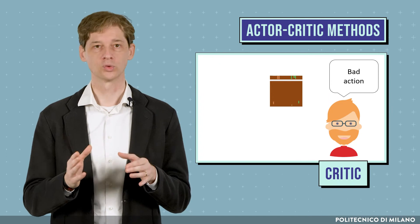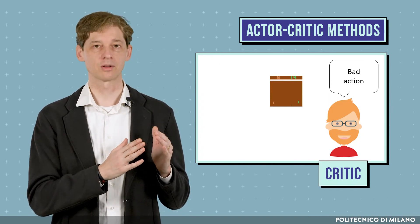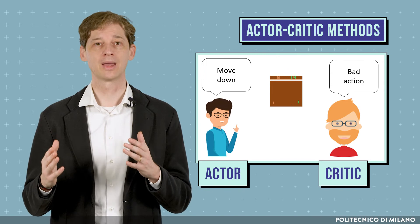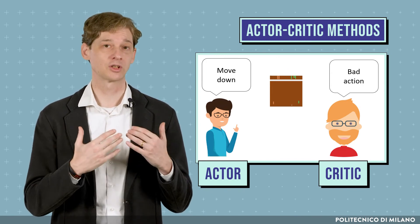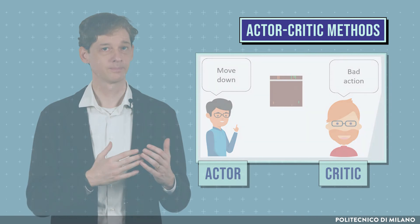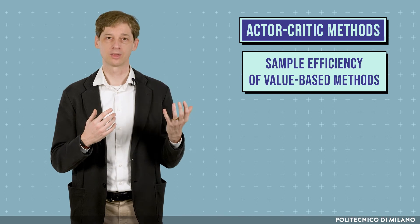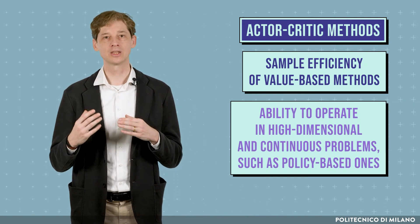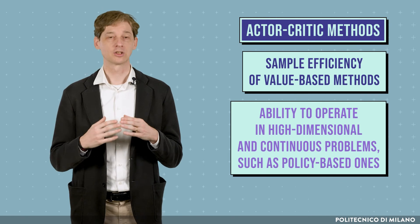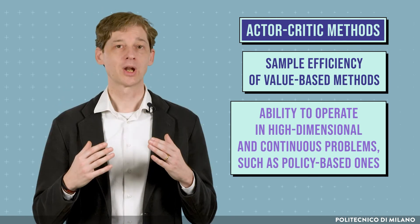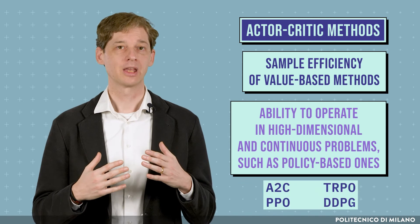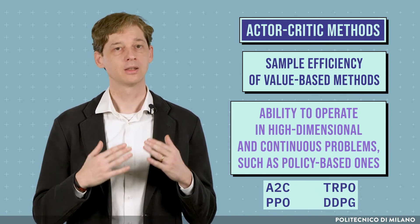The third category of methods tries to combine the strong points of the previous two. In actor-critic methods there are two main components: the critic, whose goal is to estimate the value function of the current policy, and the actor, whose goal is to implement the agent policy and update it according to the suggestions coming from the critic. In this way, actor-critic methods can enjoy the sample efficiency of value-based methods, as well as the ability to operate in high-dimensional continuous control problems like policy-based ones. Popular actor-critic algorithms are A2C, TRPO, PPO, and DDPG.